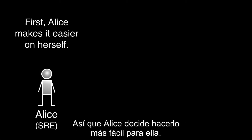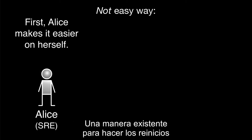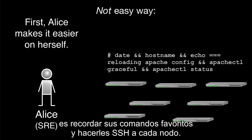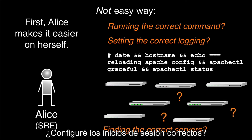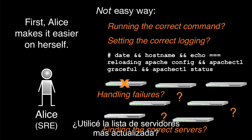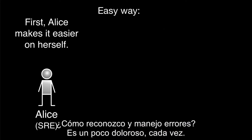So Alice decides to make it easier on herself. Her existing way to do the restarts is to recall her favorite commands and SSH them to each node. Each time she has to ask herself: did I run the correct command? Did I set up the correct logging? Did I use the most up-to-date list of servers? How do I recognize and handle errors? It's a bit of a pain each time.